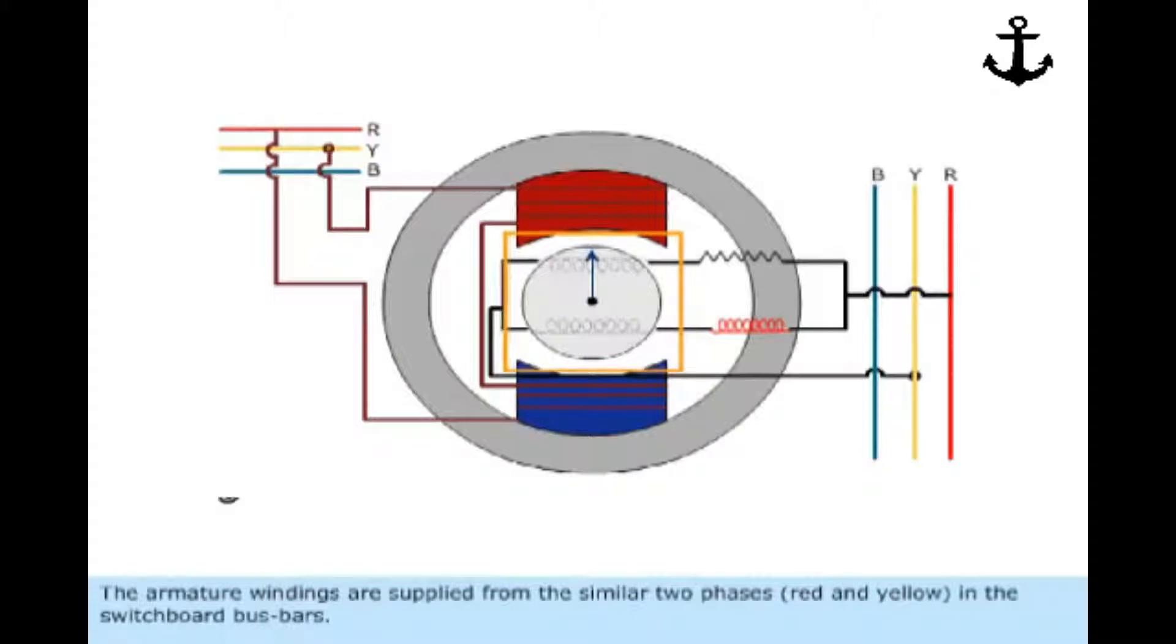The armature windings are supplied from the similar two phases, red and yellow, in the switchboard busbars.